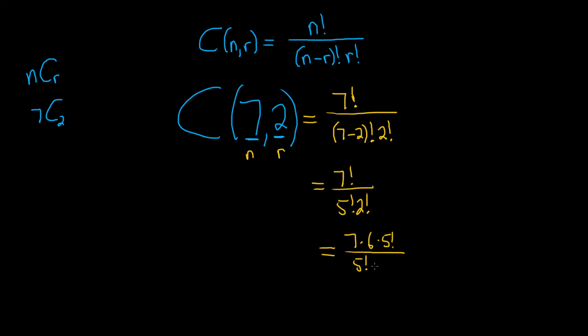2 factorial is 2 times 1. The 5 factorials cancel, and 2 goes into 6 three times. So we end up with 7 times 3 equals 21 over 1, which gives us 21. That's the final answer.